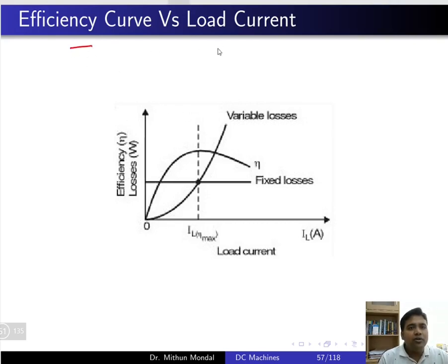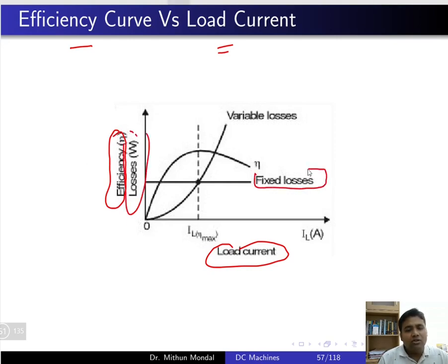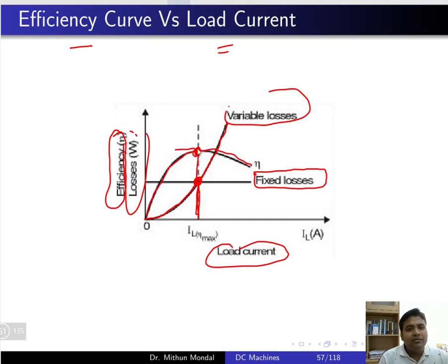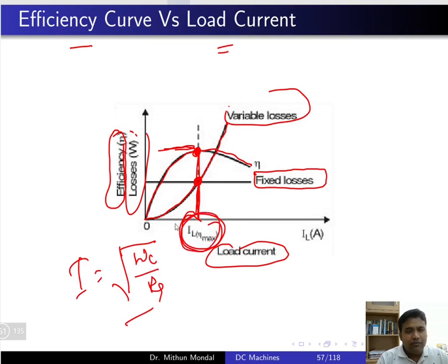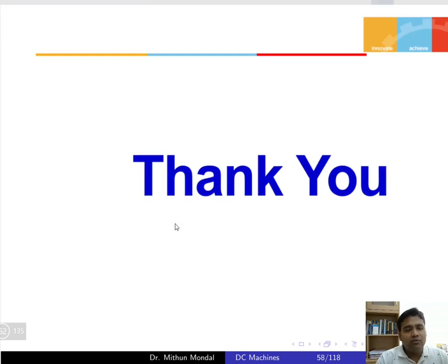If you draw the efficiency curve with load current on the x-axis and efficiency on the y-axis, the fixed loss is a horizontal line parallel to the x-axis while the variable loss increases with load current. At the intersection of fixed and variable loss curves, efficiency is maximum. The current at which maximum efficiency is achieved is I = √(constant losses / Ra).